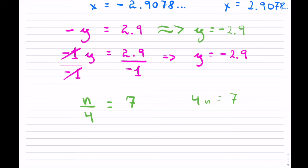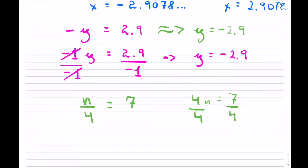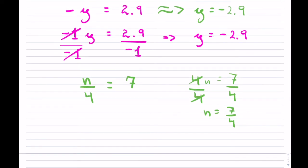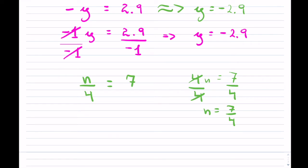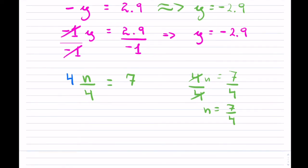When you have a 4 in the denominator, you can't divide by 4 — you want to get rid of it. So instead, you multiply both sides by 4. On the left-hand side, the 4 and this 4 cancel. Then n equals 7 times 4, which is 28. Don't get thrown off just because the number might be in the denominator.